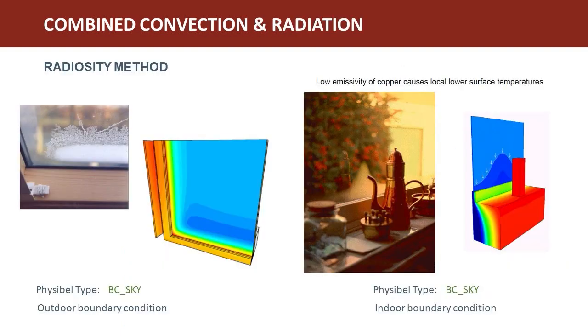The left-hand example shows the use of BC_SKY to model the undercooling condensation on the outer side of a skylight during clear sky-night conditions. BC_SKY is not just used for exterior boundary conditions. In this example towards the right, we place a coffee pot with a low-E surface near the window and see the reduced heat transfer towards the window. Here we input the indoor boundary condition as BC_SKY to perform a detailed radiosity analysis.